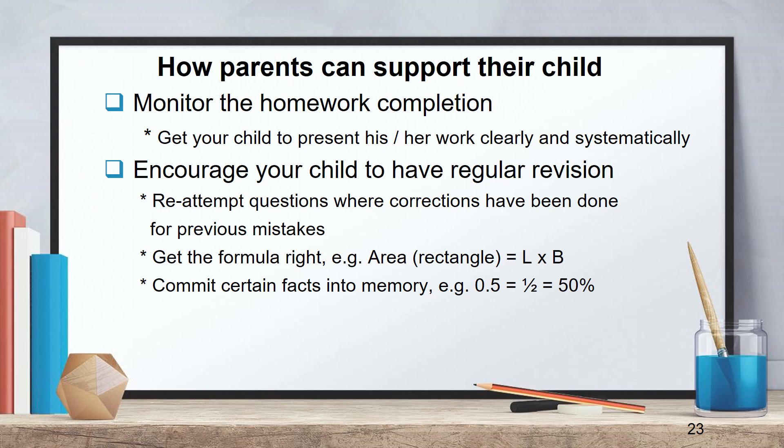Next, get the formula right. For example, area of rectangle is length times breadth and so on. And commit certain facts into memory. For example, in terms of conversion from decimal to fraction to percentage. 0.5 equals to half equals to 50%. Now, if they commit these facts into memory, it will help them with their speed and accuracy, especially for paper 1.